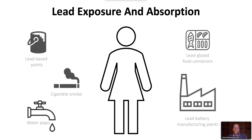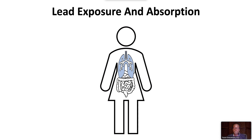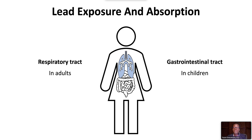Lead is absorbed into the body through the lungs, gastrointestinal tract, and to a lesser extent, the skin. The respiratory tract is the most significant route of absorption in adults, and the gastrointestinal tract is the predominant route of absorption in children.